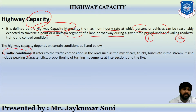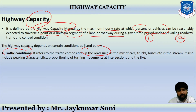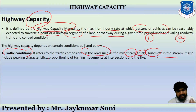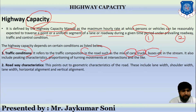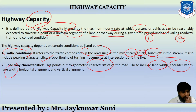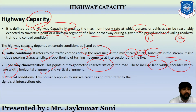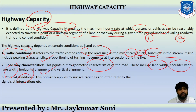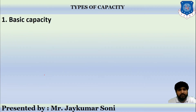Highway capacity depends on certain conditions. First, traffic condition refers to the composition of traffic on the road, such as mixed or heterogeneous traffic — combinations of cars, trucks, and buses — as well as peaking characteristics and proportioning of turning movements at intersections. Second, roadway characteristics include geometric features such as lane width, shoulder width, and horizontal or vertical alignment. Third, control conditions apply to surface facilities such as signals provided at intersections.